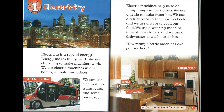Electric machines help us to do many things in the kitchen. We use a kettle to make water hot. We use a refrigerator to keep our food cold. And we use a stove to cook our food. We use a washing machine to wash our clothes, and a dishwasher to wash our dishes.